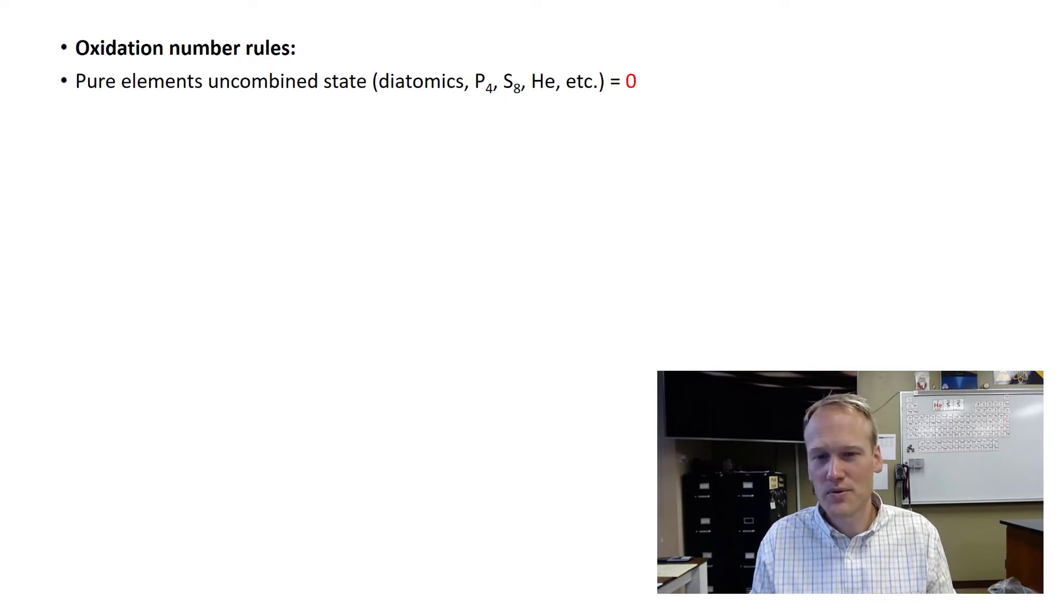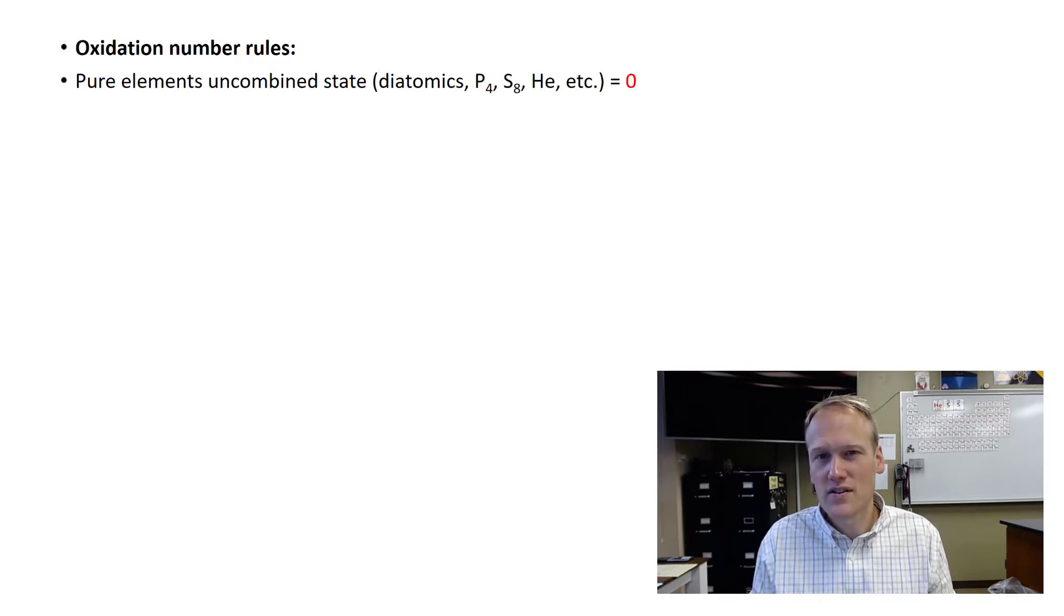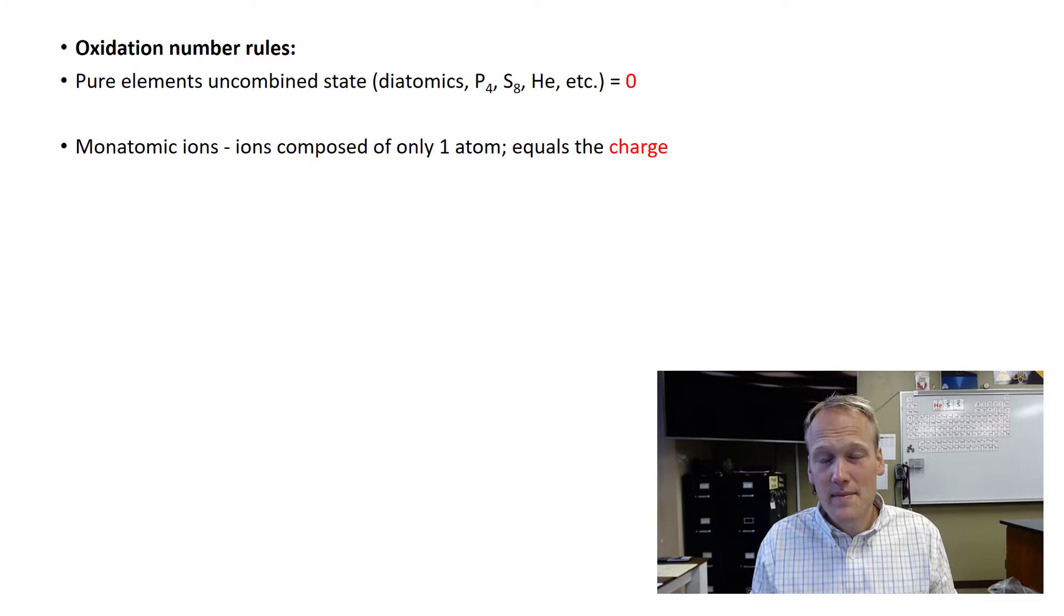So here are some oxidation number rules. First, any element that's in its pure state or elemental state would have an oxidation number of zero. So diatomics, any noble gas, they all have the oxidation number of zero. Monatomic ions, or ions that we make from the periodic table elements, would just have the charge based on the column they're in.